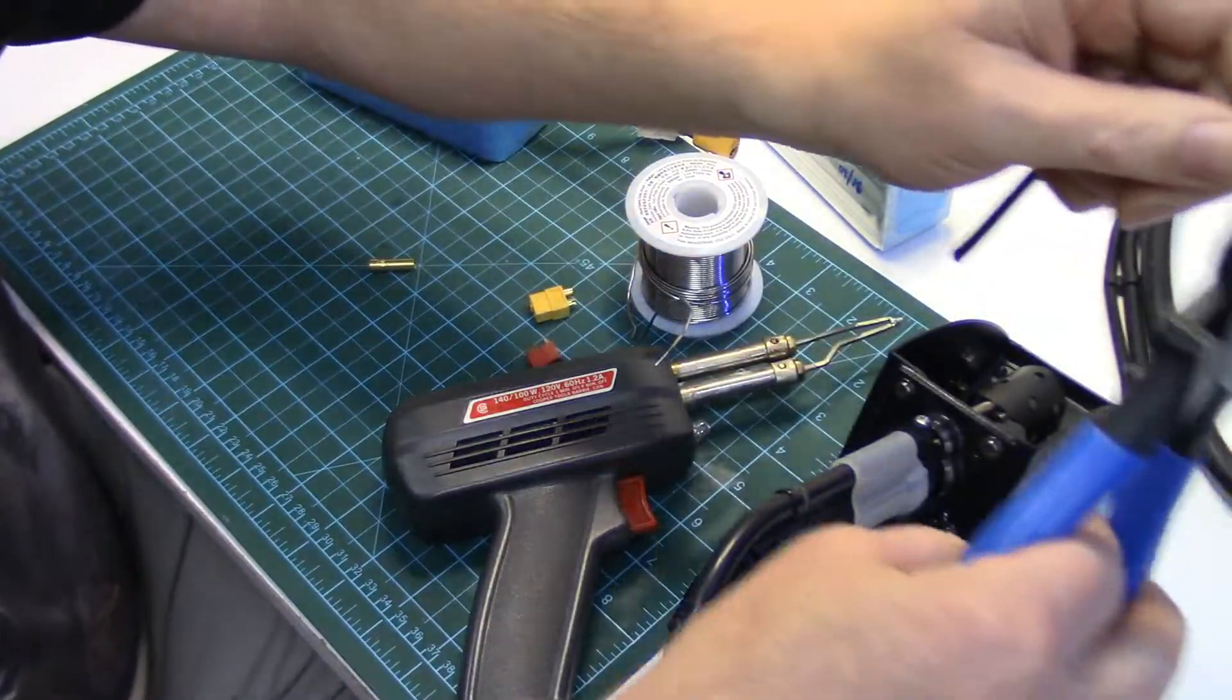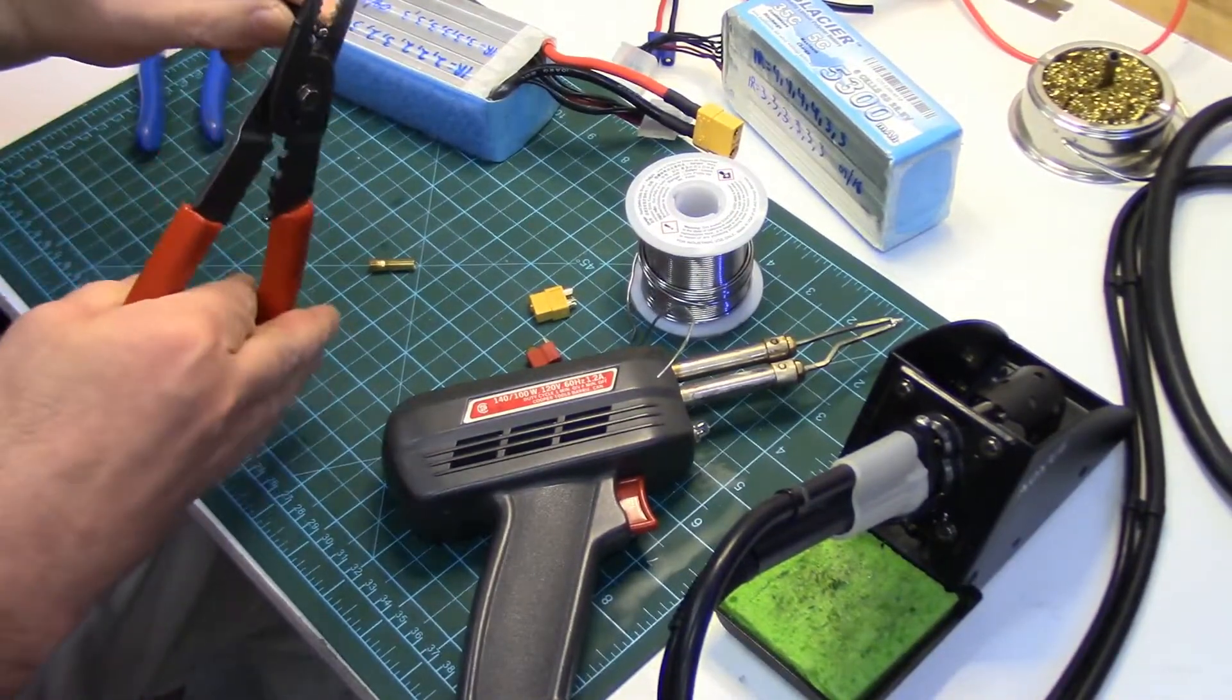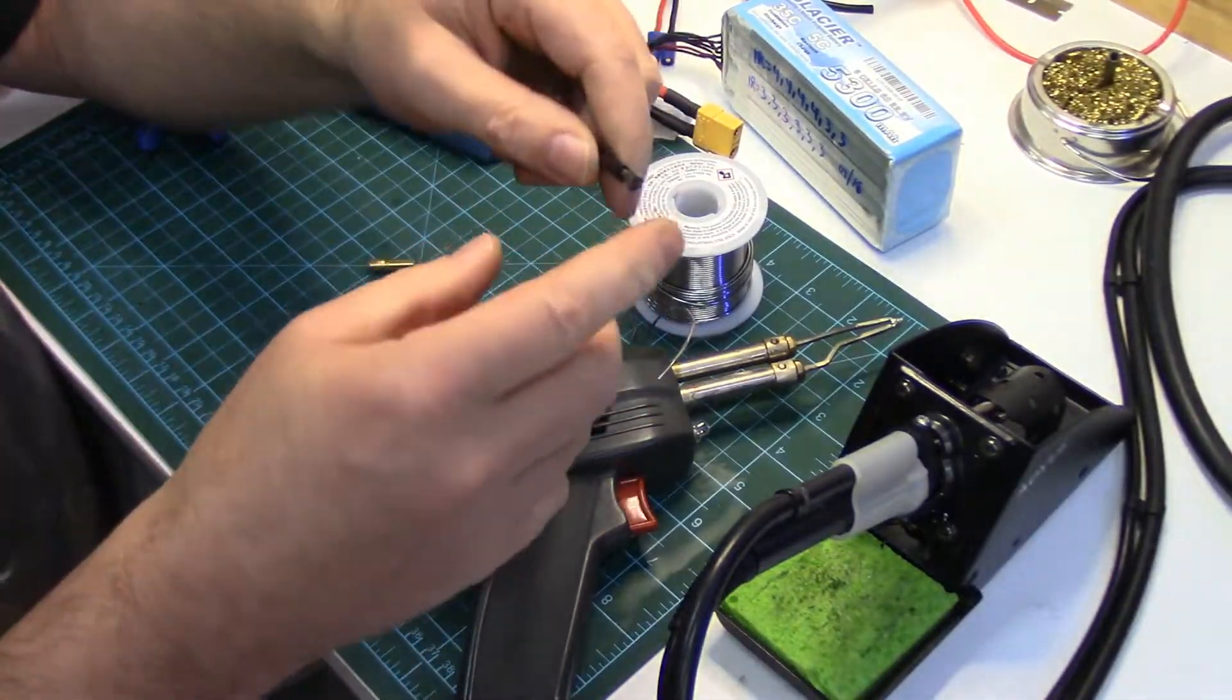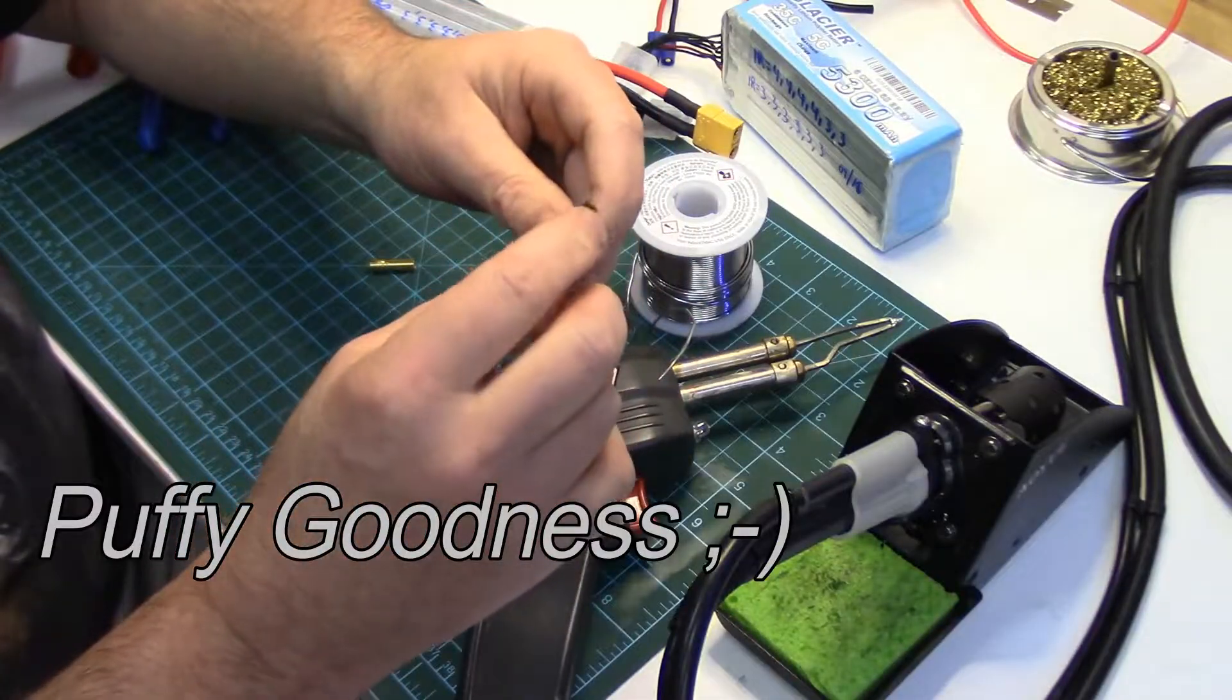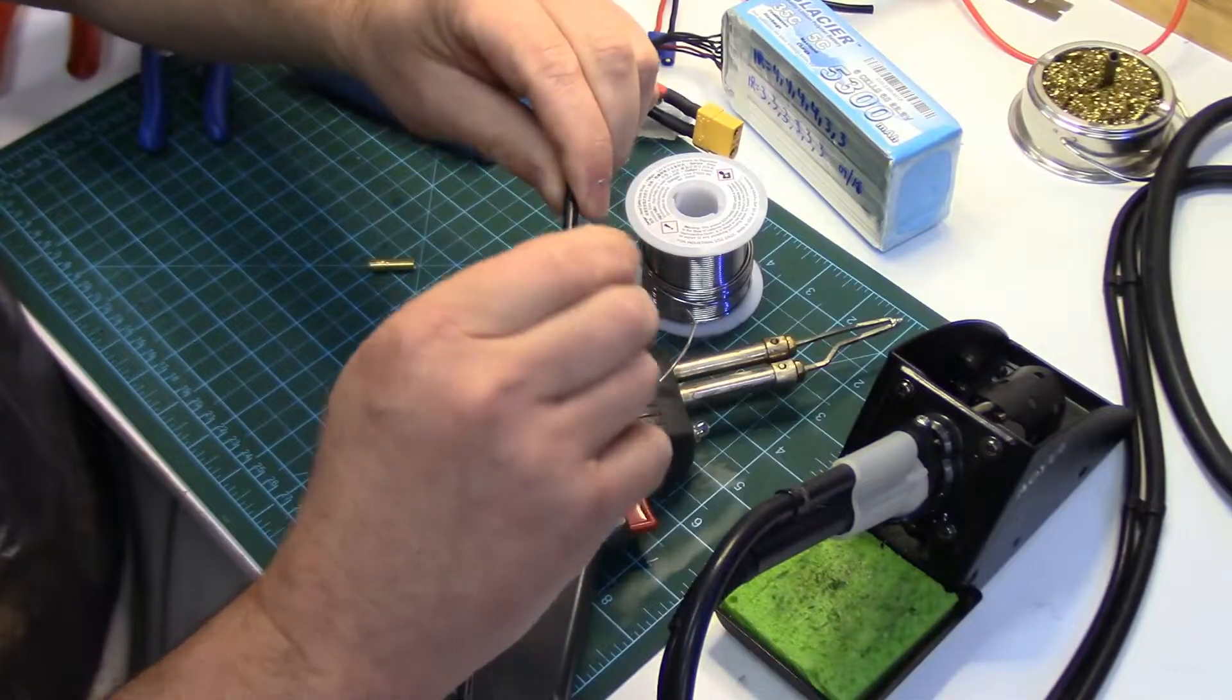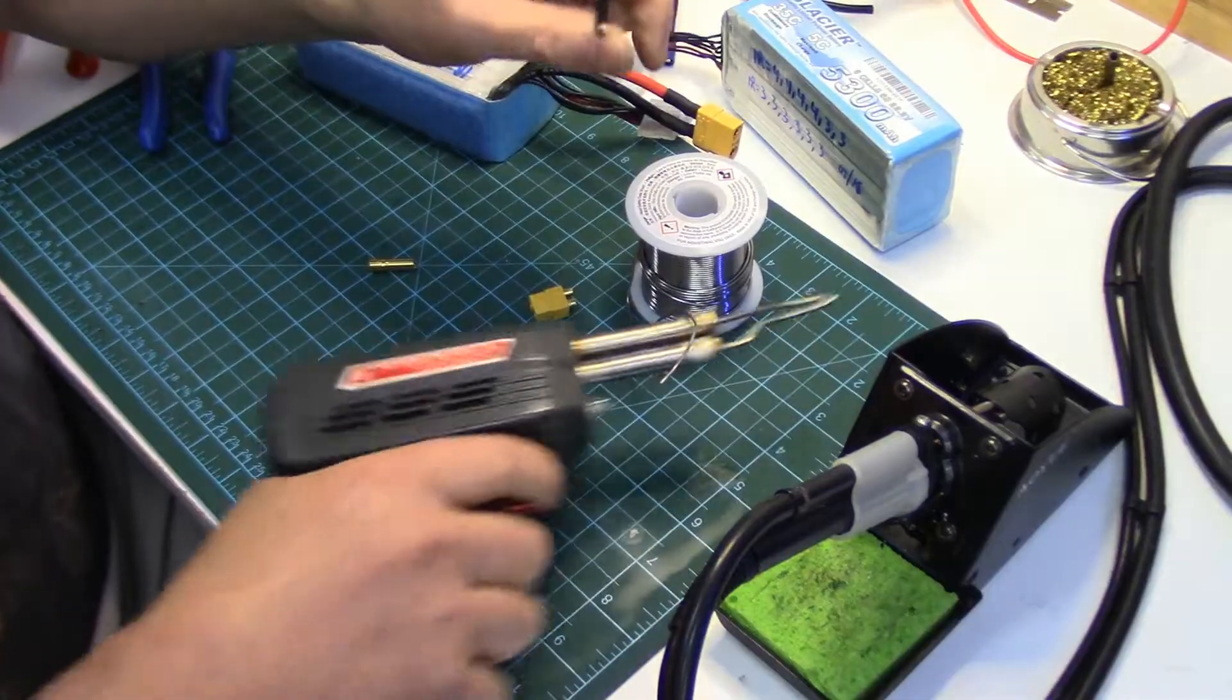So let's do this again properly. I'm just going to chop that end off. We'll strip it. And usually when you strip this stuff, it kind of frays out because there's so many strands in here. So I usually give it a little twist. That'll help hold those strands together as you're applying the solder.